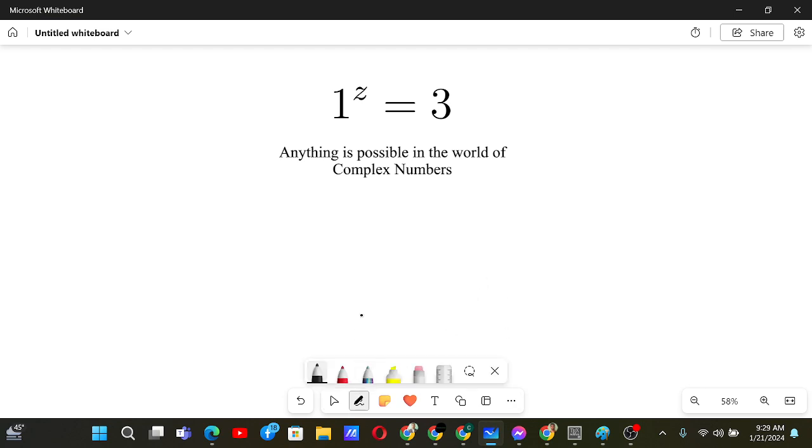Anything is possible in the world of complex numbers, so let's see how we solve this equation. If we were dealing with real numbers, then 1 to any real number power is always 1, which is why it's not possible to get 3. But if we're dealing with complex numbers, there are some ways we can find the solution.